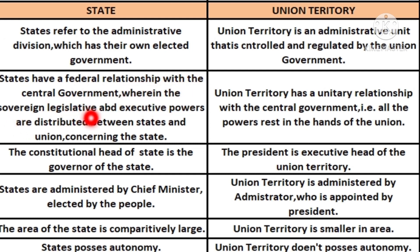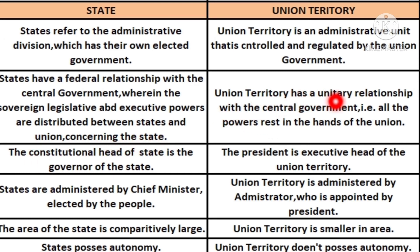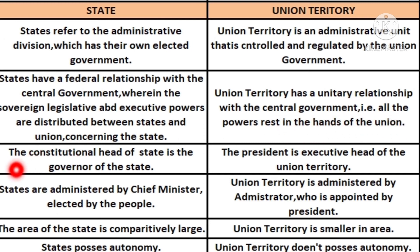States have a federal relationship with the central government, wherein sovereign legislative and executive powers are distributed between the state and the centre. Concerning union territories, they have a unitary relationship with the central government — for example, all powers rest in the hands of the union.